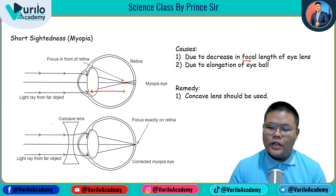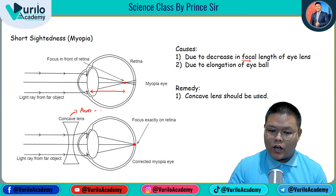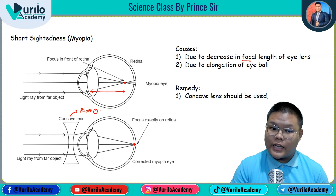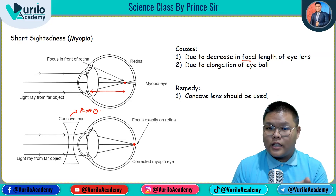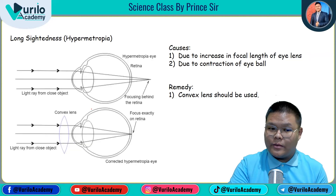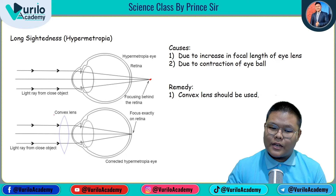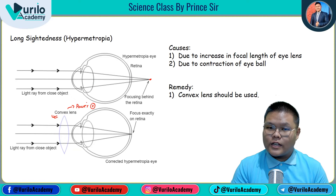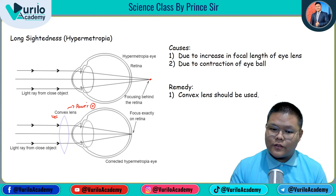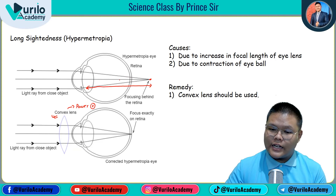The remedy for myopia is to use a concave lens. With a concave lens, the focal length is negative, meaning the power is also negative — so a person with myopia wears a minus power glasses. They can see nearby but not far. For hypermetropia (long-sightedness), the focal length increases and the eyeball contracts, so a convex lens with positive power is used to correct vision.